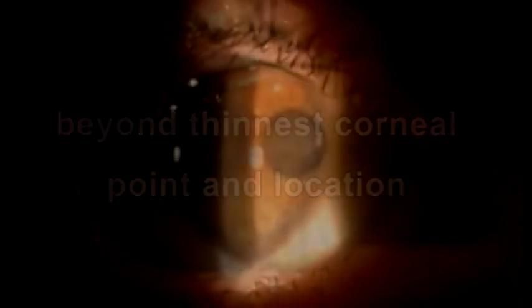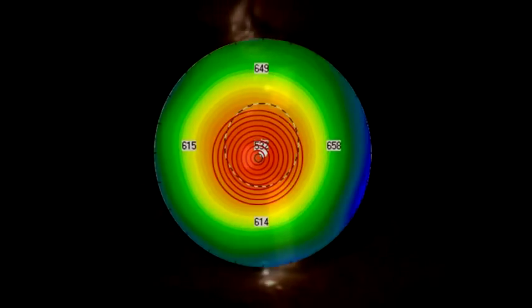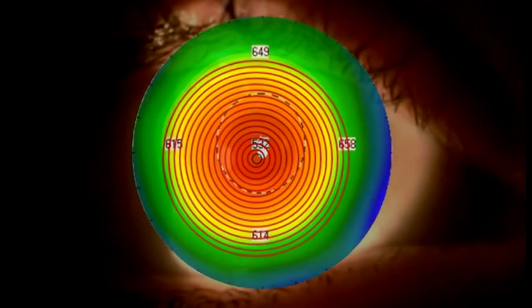Beyond thinnest corneal point and location, thickness distribution is described as average thickness values in concentric annular circles with increasing diameters centered at the thinnest corneal point.